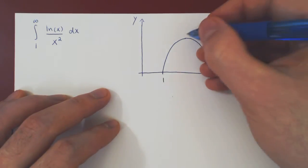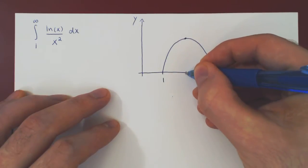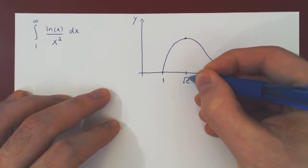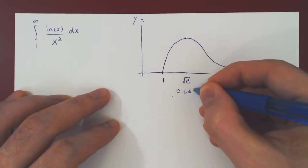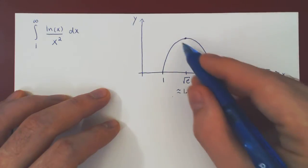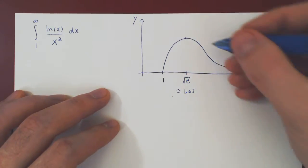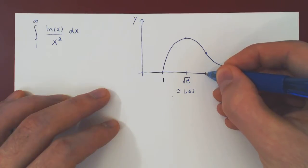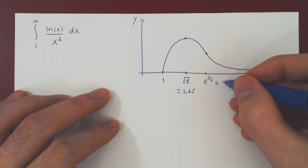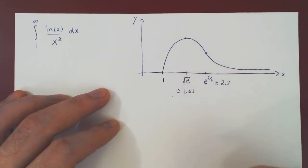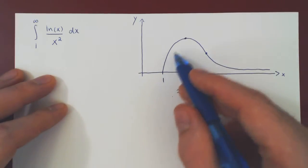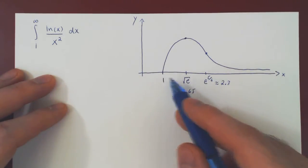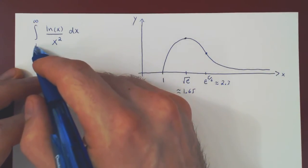Now to give you a few more details, the critical point occurs exactly at the square root of e, and that is approximately 1.65. The inflection point where the curve changes from concave down to concave up occurs at e to the 5 over 6, and that is approximately 2.3. You have in the limit a horizontal asymptote, that is y equals 0. This is the graph of ln of x over x squared from 1 to infinity. This is the interval of interest.